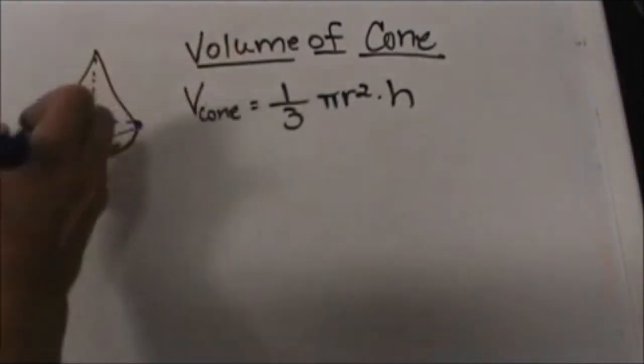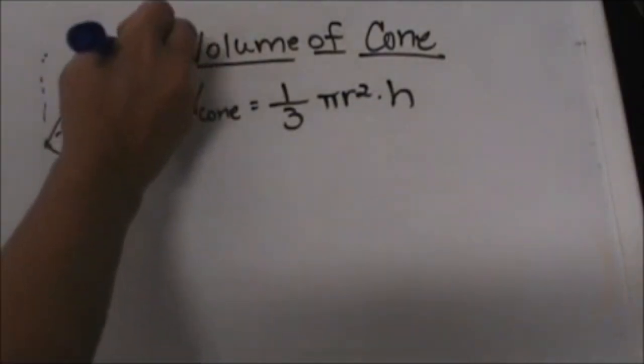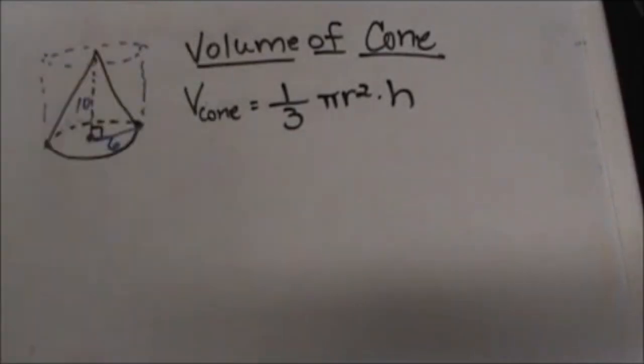Well pi r squared h is actually the volume of a cylinder that has the same height and the same radius.